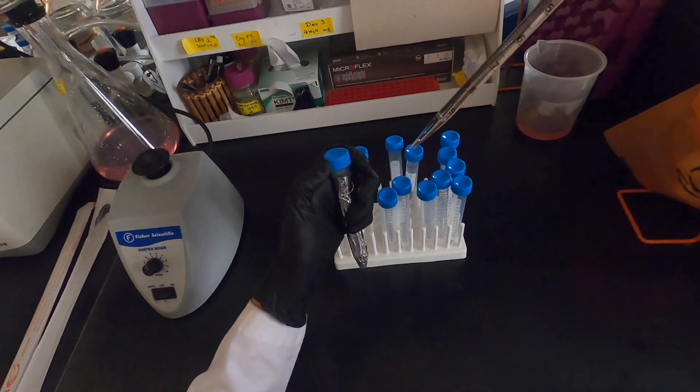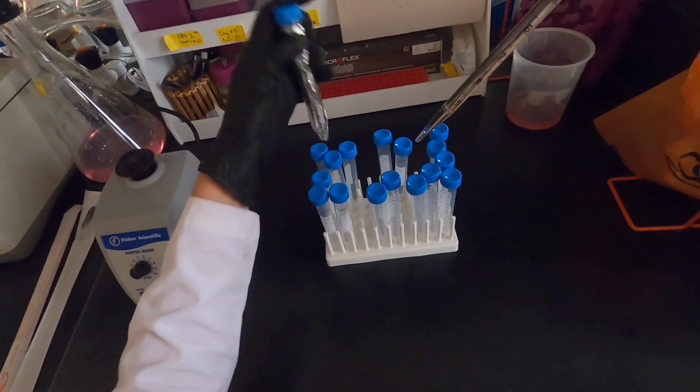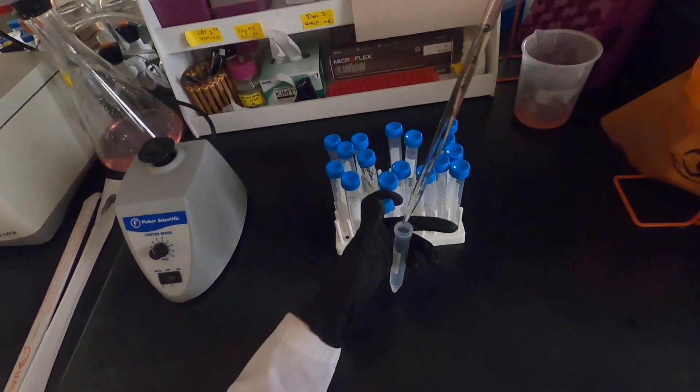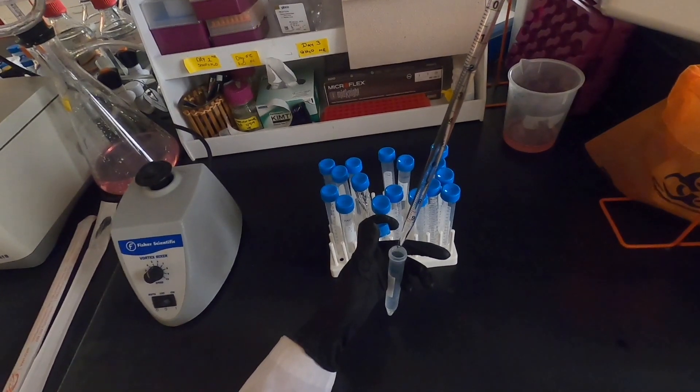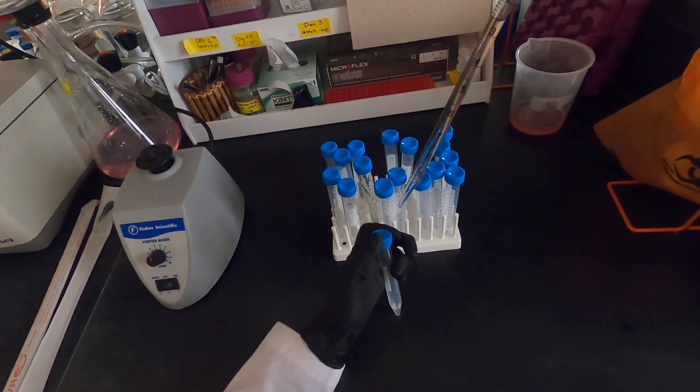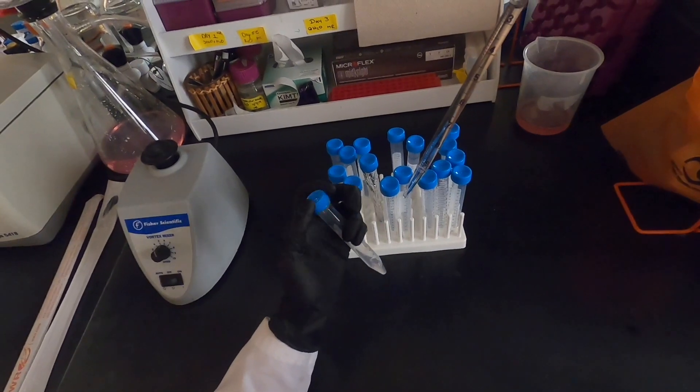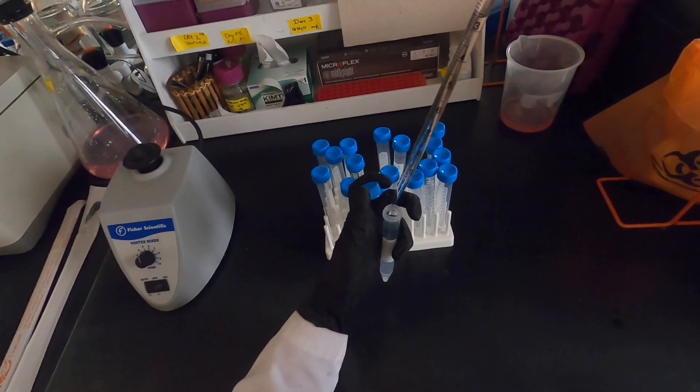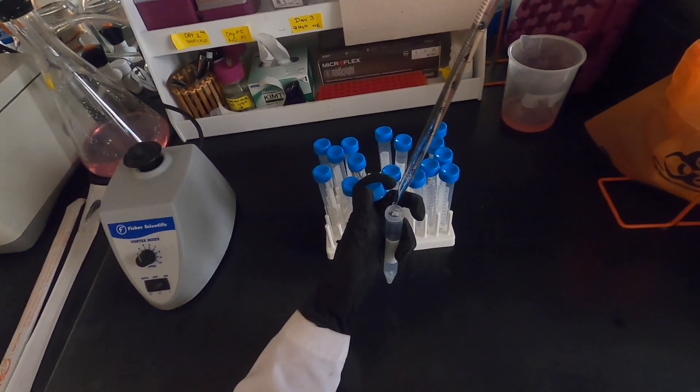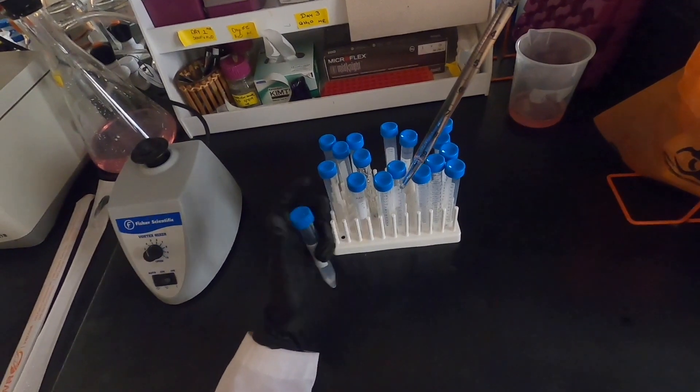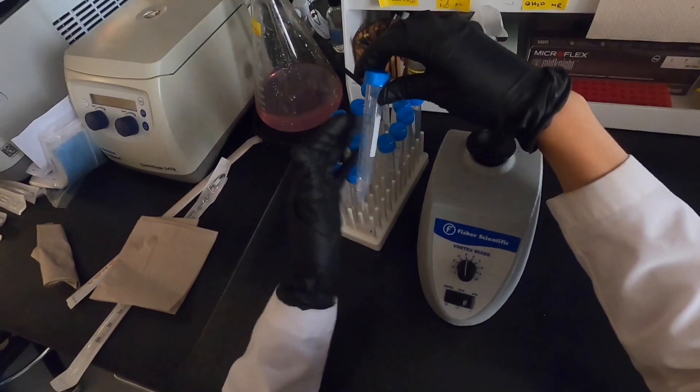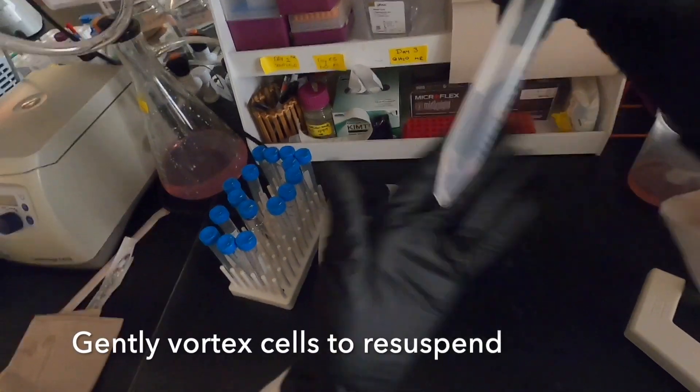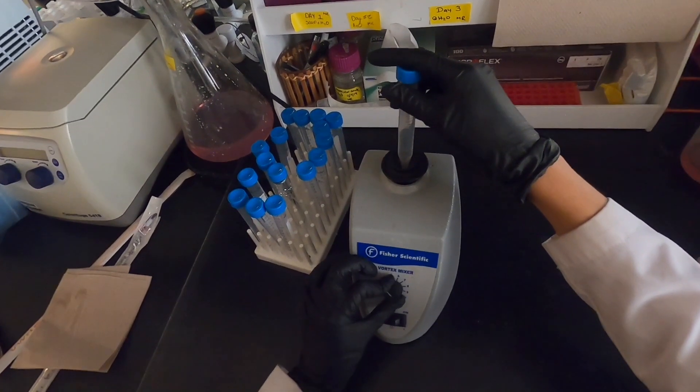Because PI can bind both DNA and RNA, we use RNase in order to degrade RNA that is present in the sample. This will leave mostly DNA for PI to bind to. We will now resuspend our pellets by gently vortexing. You can also resuspend the pellet by pipetting up and down.